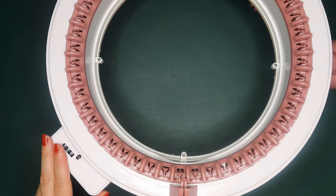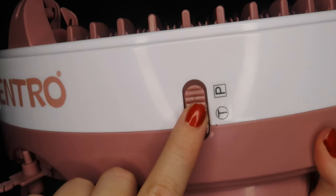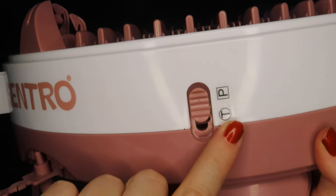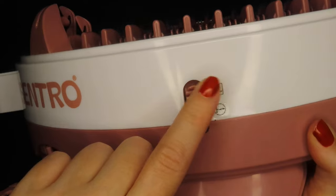The first thing you want to do is make sure that your machine is switched to the panel setting, which is the top switch. Just in case this is worn away on your machine: top switch is P for panel, bottom one is T for tube.